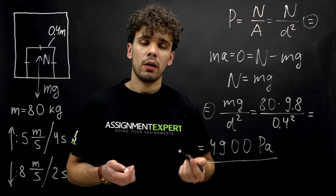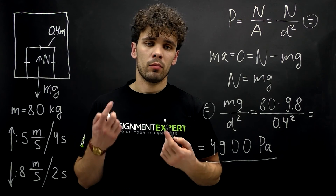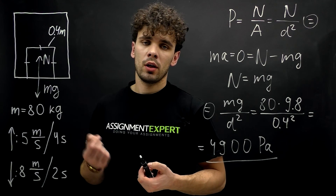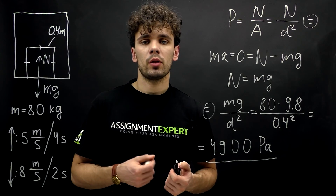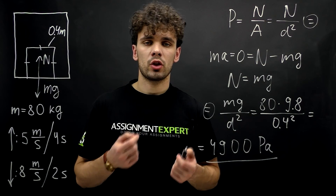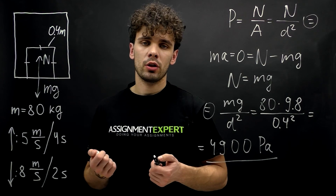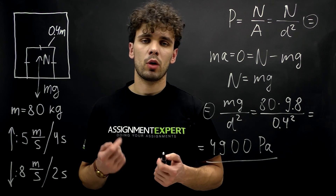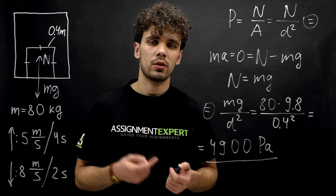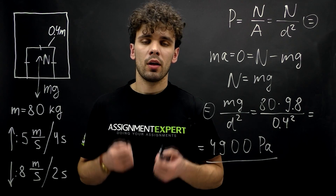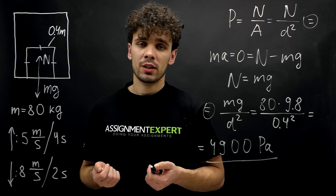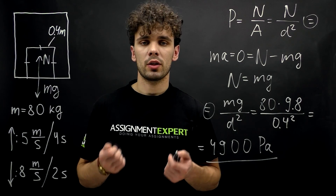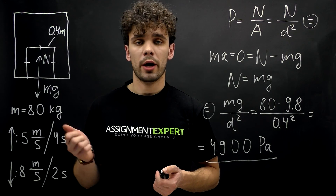So today we found three pressures experienced by the elevator floor: the pressure when it moves up and down with a certain acceleration, and the pressure when it moves at a constant speed of 1 meter per second in any direction. Thanks for watching, and please send us more questions so we can answer them in our videos. Goodbye!